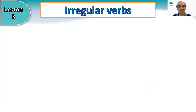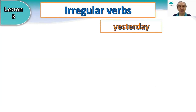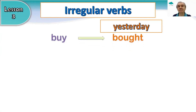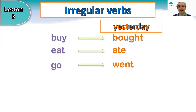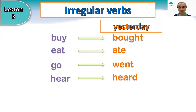What do you remember from yesterday's classes? The irregular verbs. To buy — yesterday, I bought some shoes. Eat — last night, I ate. Go — past tense of go — yesterday, I went shopping. To hear — last week, I heard a song on the radio.